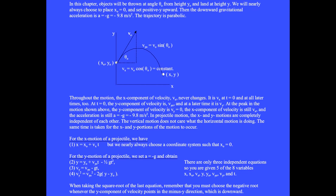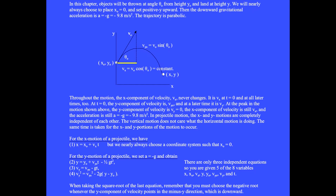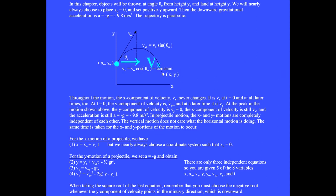At t equals zero, the initial velocity vector is v sub zero and it points at angle theta zero from the plus x axis. We make a triangle here. The side of the triangle opposite the angle gives v sub y zero equals v zero sine theta zero. The side adjacent to the angle gives v sub x equals v sub zero cosine theta zero, and this is constant throughout the motion — it never changes. It is v sub x at t equals zero and at all later times too.